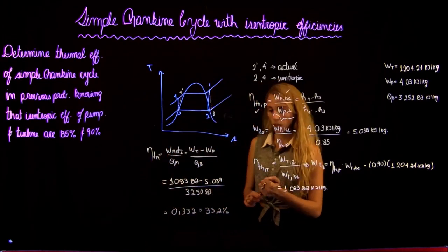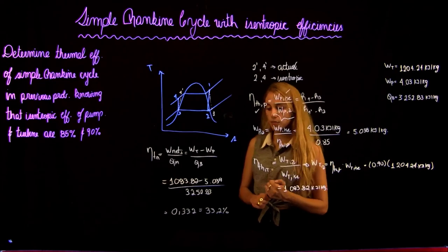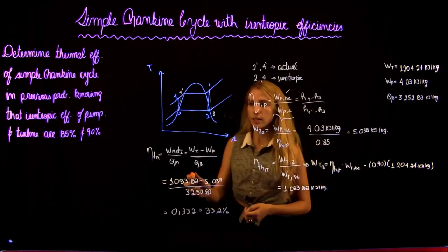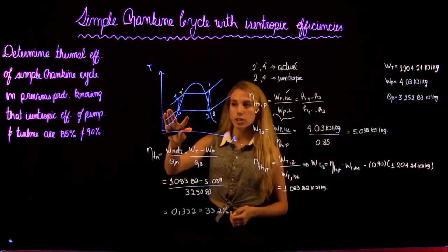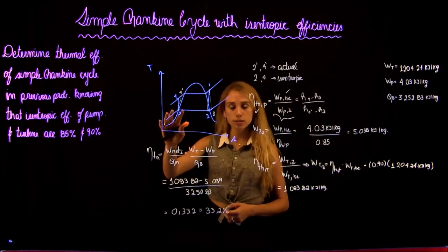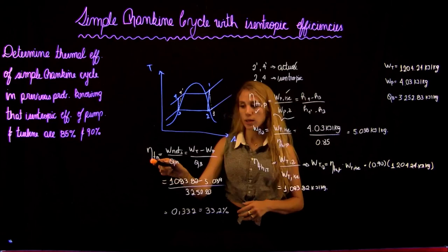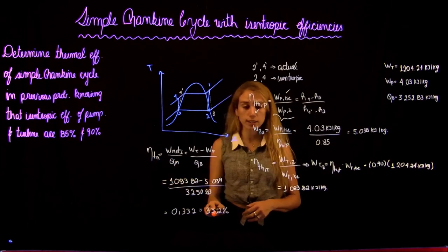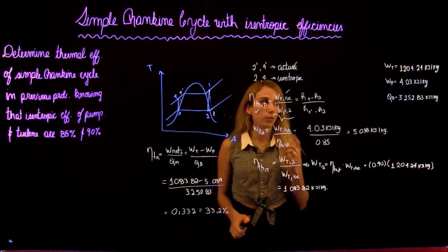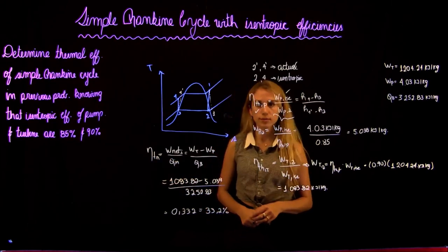So as we said before, in an actual case there are losses due to different factors, and that is why the thermal efficiency of 33.2% is lower than what we found in the ideal isentropic case, which was 34.4%.